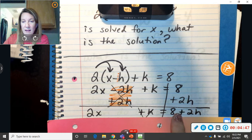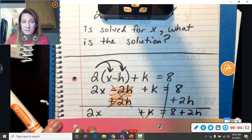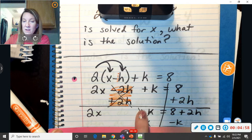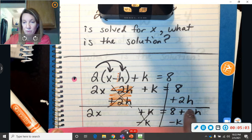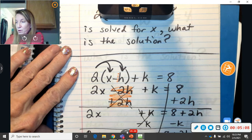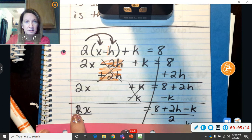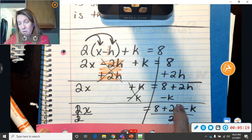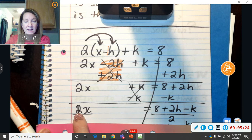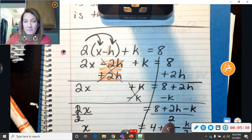We're still trying to get the x all by itself. So I want to get rid of the k. The opposite of plus k is minus k. Those cancel each other out. You can't really do 8 plus 2h in a calculator, so I just wrote them across. Then the last step to isolate x all by itself is to divide 2. So that is your final answer. But you've got to divide every single piece by 2.